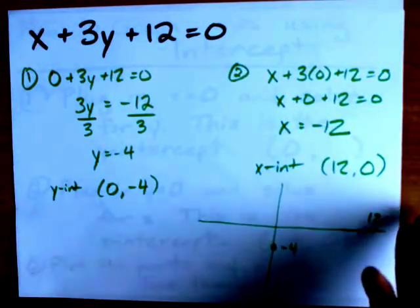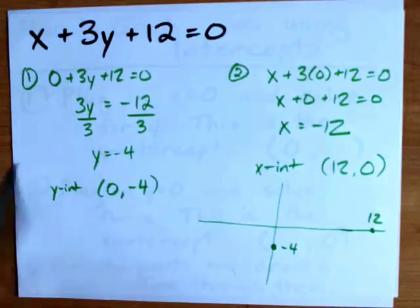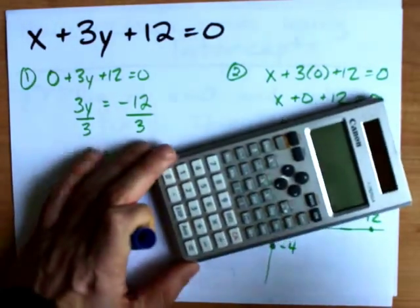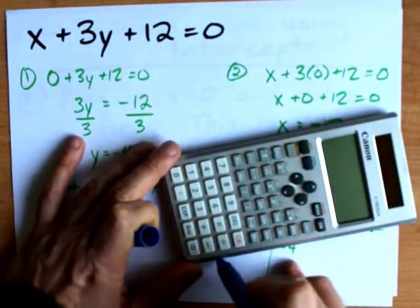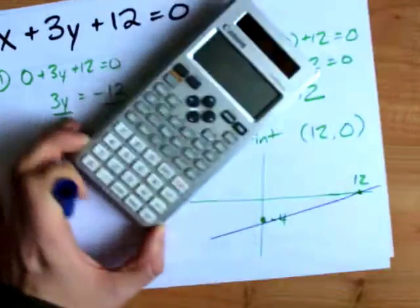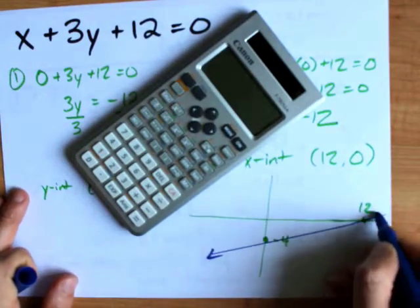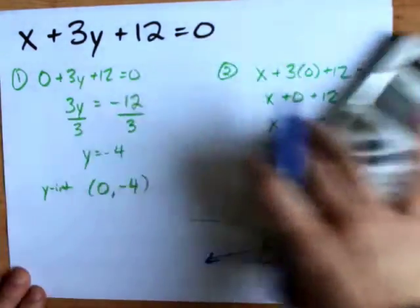And I will label that as -12. Then I use a ruler, which I don't actually have, but I'll use this calculator as a ruler. And I draw a line through those two points. I kind of missed, but it was close enough. And there it is. There's my straight line.